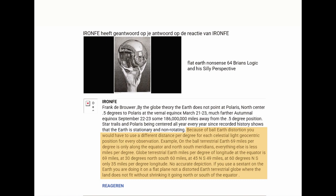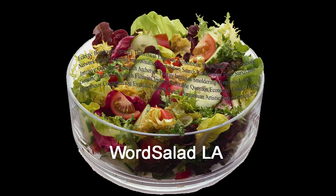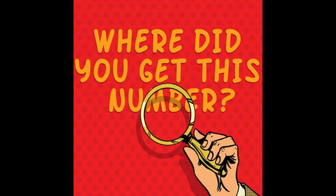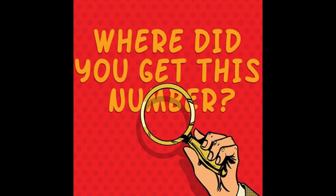No accurate depiction. If you use a sextant on the earth you are doing it on a flat plane, not a distorted earth terrestrial globe where the land does not fit without shrinking it going north or south of the equator. This word salad is a lot of woo-woo. I was first astounded by those numbers — where did he get them from? What was his thought process? And then it dawned on me.